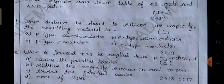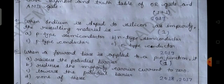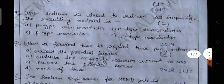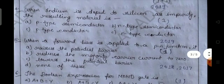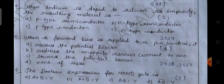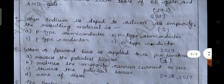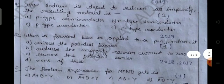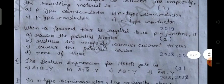Question number four: when indium is added to silicon as an impurity, the resulting material is — option A: P-type semiconductor, option B: N-type semiconductor, option C: P-type conductor, option D: N-type conductor. This is from 2019 and is a one-mark objective question.